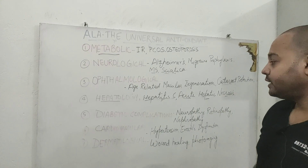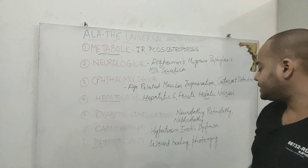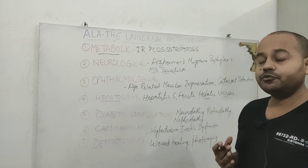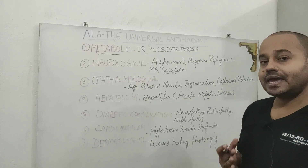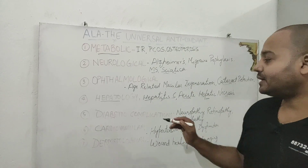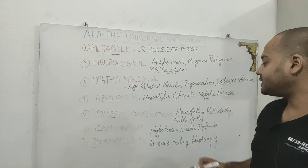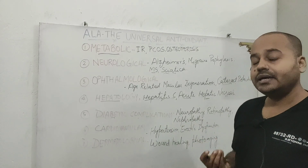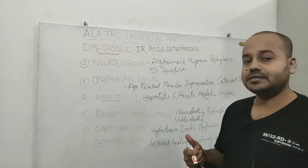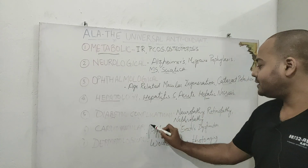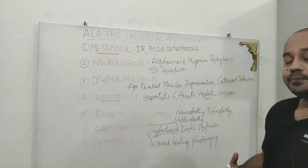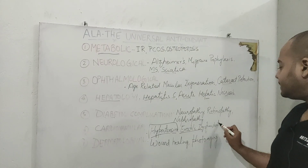Alpha lipoic acid can prevent diabetic complications like neuropathy, retinopathy, and nephropathy. It is very useful if you have diabetes to prevent damage to your kidneys, eyes, and nervous system — and it is recommended to combine it with benfotiamine to delay diabetic complications. Because it helps achieve better sugar control, it also improves nitric oxide synthesis, which helps control blood pressure and prevent hypertension.